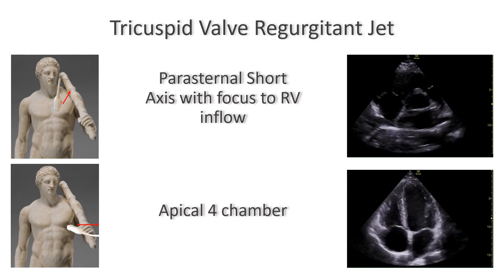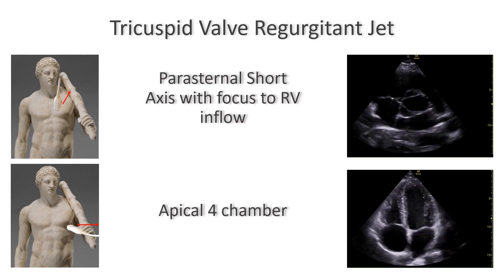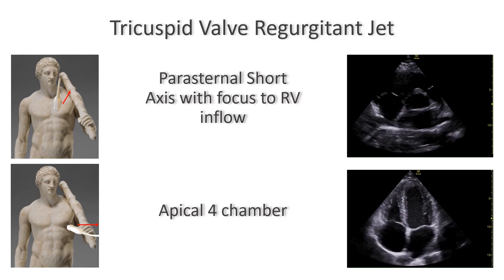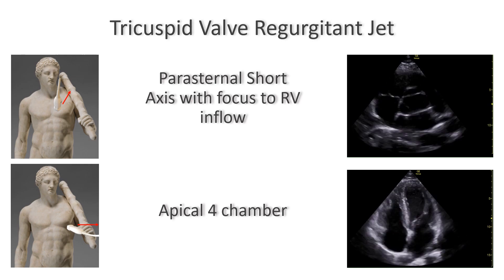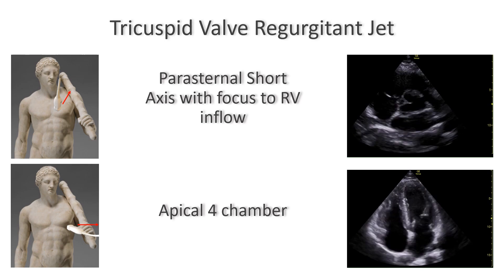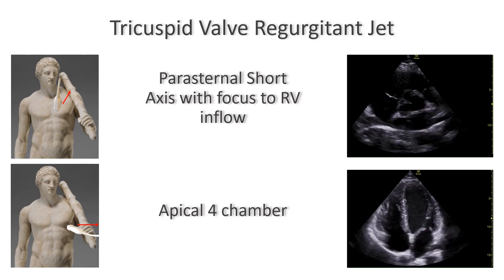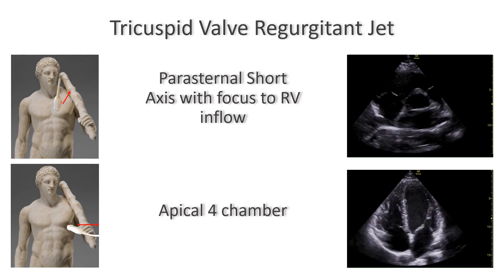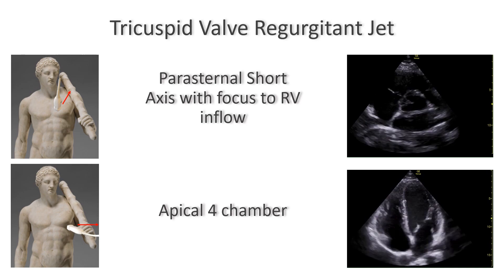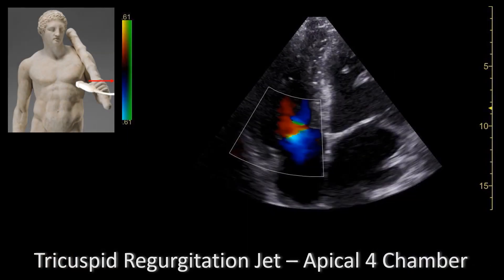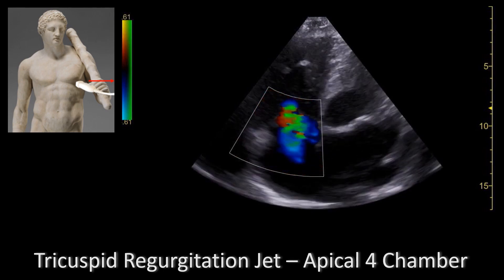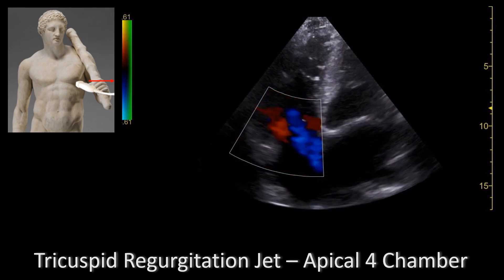Velocity measurements are angle dependent, thus it is better to measure the tricuspid regurgitation velocities from multiple views and use the one with the highest velocity — for example, the right ventricular inflow view or the apical four-chamber view. Once you're happy with your view, you add color to the tricuspid valve and you look for any regurgitant jets.